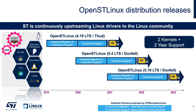We remind here the software release flow. The product usually has two major releases per year, following kernel LTS releases. We currently support two kernel LTS releases at the same time, and we support each during two years. Some minor releases are regularly provided under GitHub.